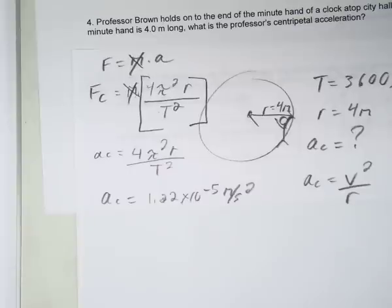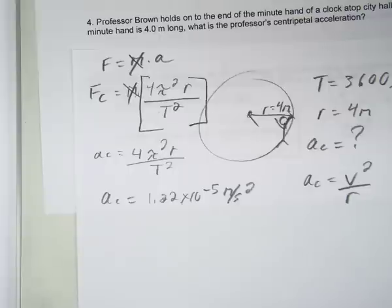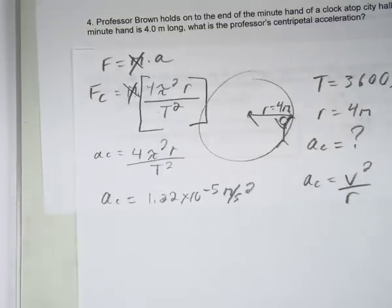Does that make sense? Does it make sense that it's a ridiculously small number? It kind of does. Think about it - the last time you looked at the minute hand on a clock, did you actually see it move? Probably not. You can see that its position changed if you look away and come back, but you cannot actually perceive its motion. It moves too slowly.